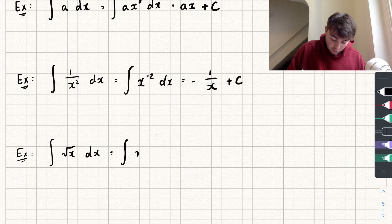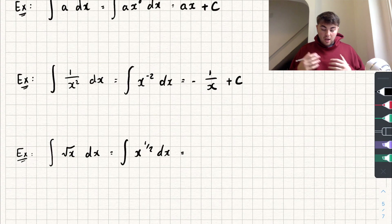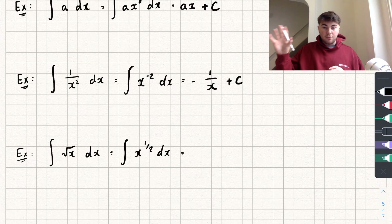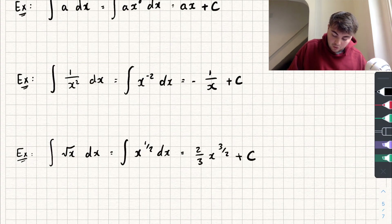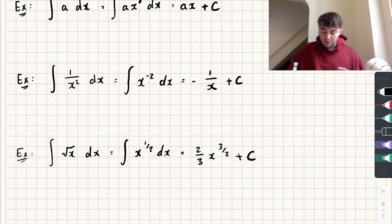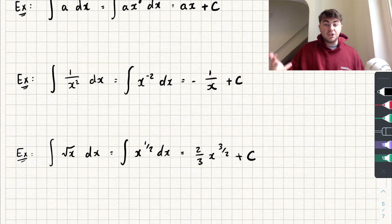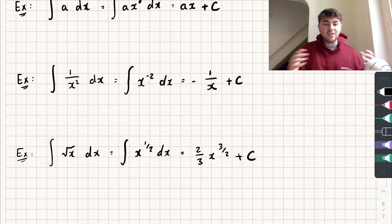Finally, the integral of the square root of x, which equals the integral of x to the power of one half. We add one to the power to get x to the power of three over two, then divide by three over two — which gives us two over three times x to the power of three over two — plus the constant of integration, plus c. Hopefully this video was useful. If it was, like, subscribe and share, and go to my channel for tons of other maths tutorials.